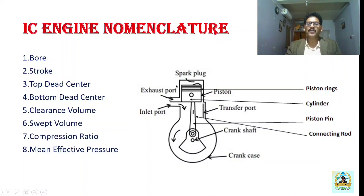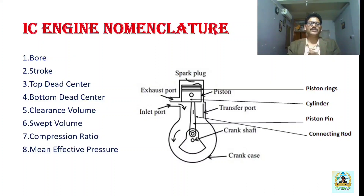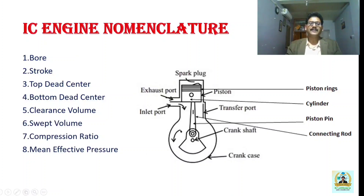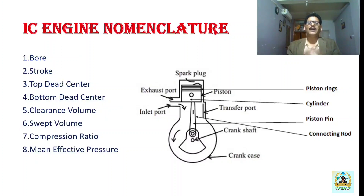Swept volume is the volume swept by the piston in moving from top dead center to bottom dead center. Compression ratio is the ratio of the total cylinder volume to the clearance volume; total cylinder volume includes the swept volume and clearance volume together. Mean effective pressure is a very important parameter to measure the performance of an internal combustion engine — although the pressure never remains constant, we take into consideration its mean value.